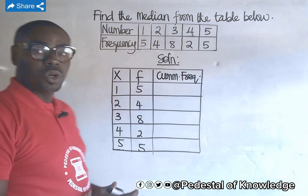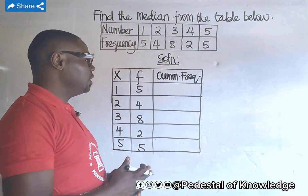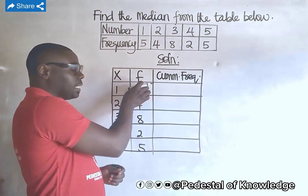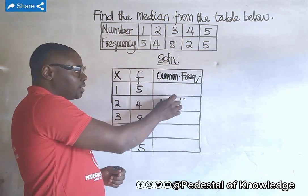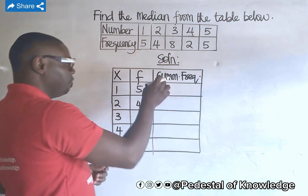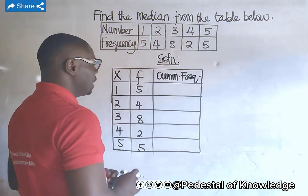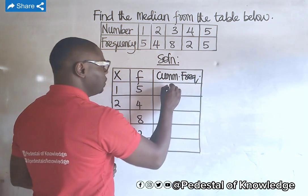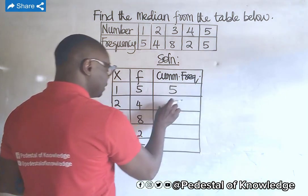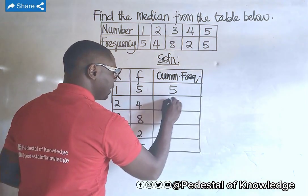Now let us compute the cumulative frequency column. Remember that the cumulative frequency of the first class is equal to the frequency of that class, but for subsequent classes the cumulative frequency is obtained by adding the cumulative frequency to the frequency of the class just below it. So for the first class the cumulative frequency is five, and for the second class it is five plus four, which equals nine.